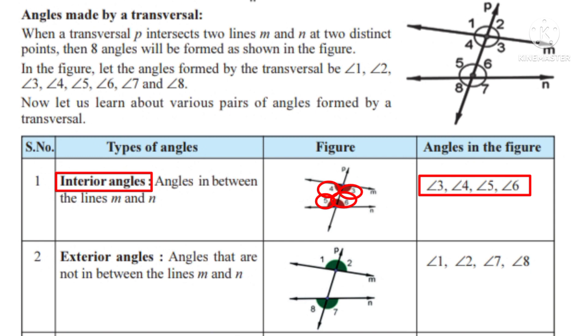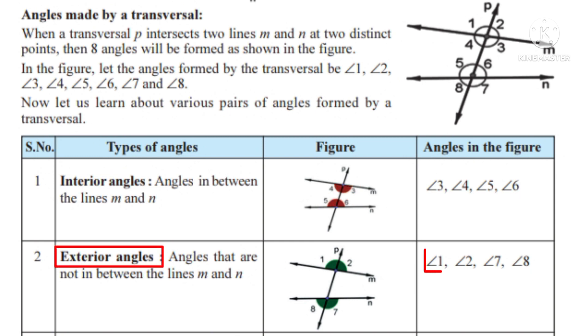Number 2: exterior angles. Exterior means outside. The angles which lie outside the lines M and N are exterior angles. They are angle 1, angle 2, angle 7 and angle 8.